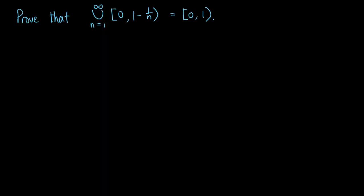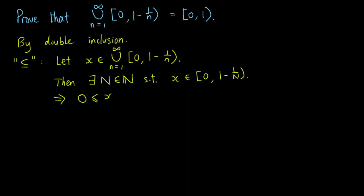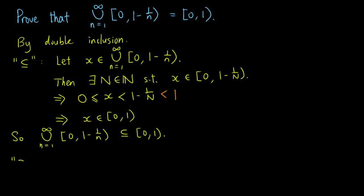Now, let's look at an example. We want to prove that the infinite union of the intervals [0, 1 - 1/n) is equal to the interval [0, 1). This is an equality of two sets, so we use double inclusion. First, let x be an element of the left-hand side. Then there is a positive integer N such that x is in the interval [0, 1 - 1/N). This implies that 0 is less than or equal to x, which is less than 1 - 1/N, which is less than 1. So x is in the interval [0, 1). Hence, the infinite union is contained in the interval [0, 1).